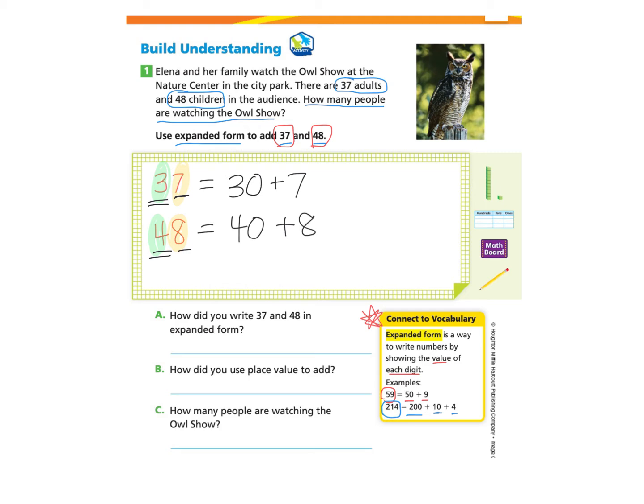Now we will add these numbers, which are in expanded form. We will start with the tens. We can add the 30 and the 40 because they are both tens and easy to add, and we find that that is 70. And then we can add 7 and 8 and find that that's 15.